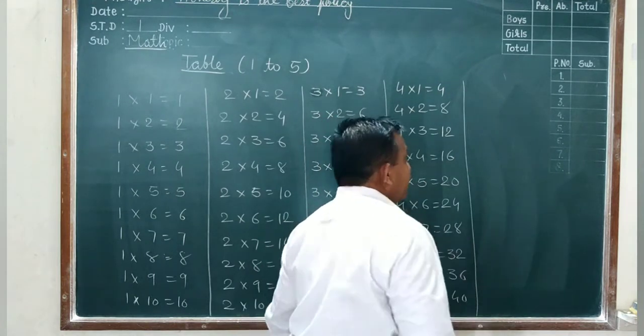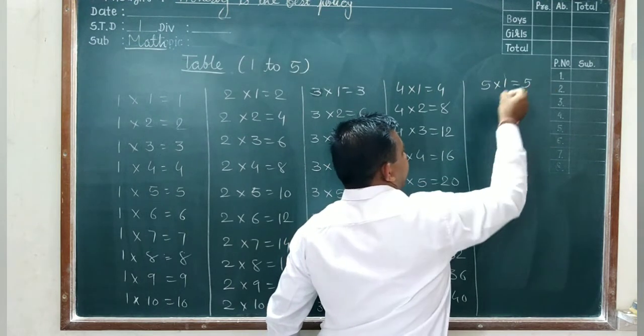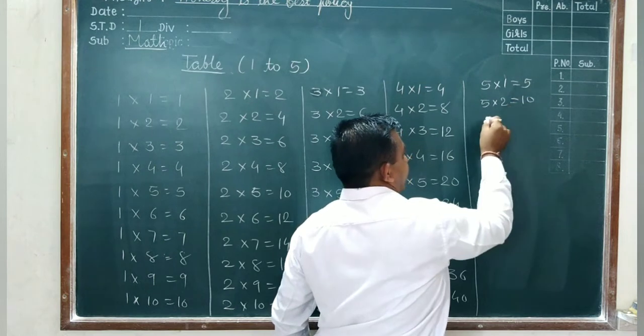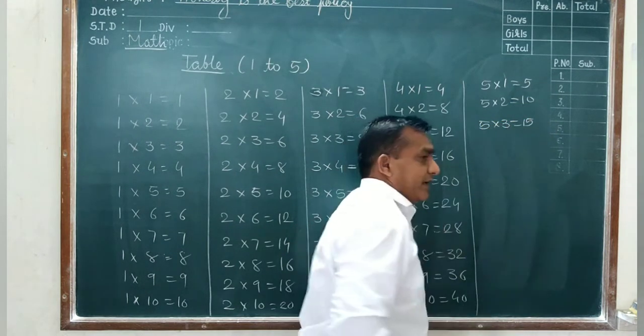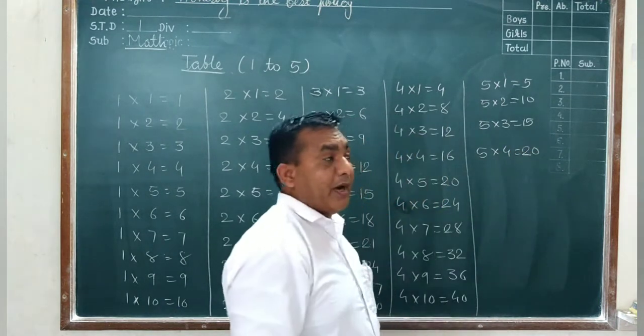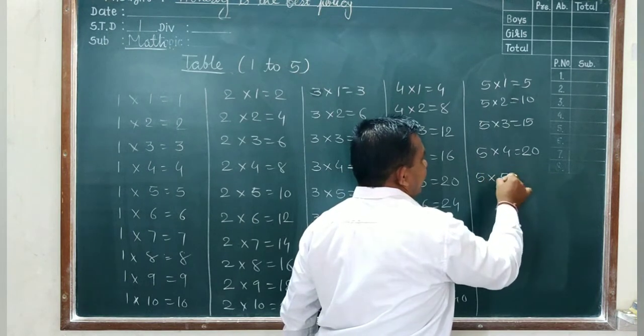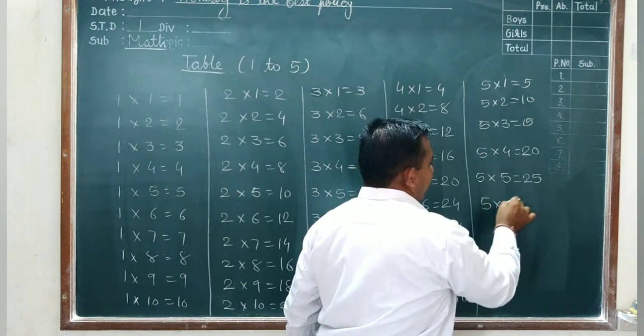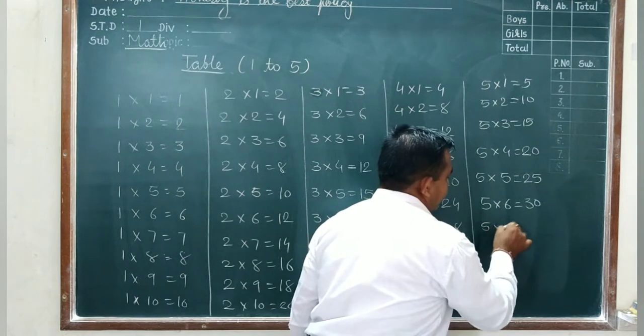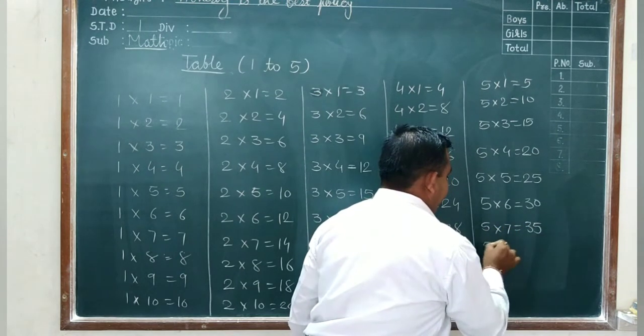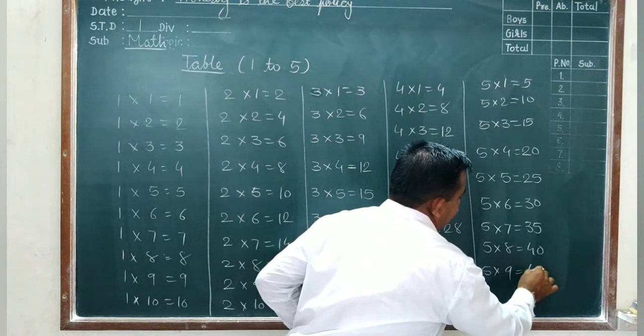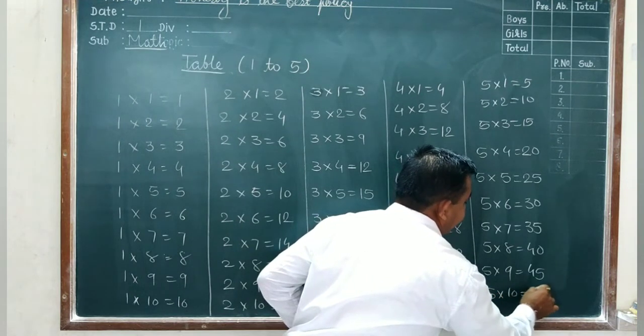Now table 5: 5 ones are 5, 5 twos are 10, 5 threes are 15, 5 fours are 20, 5 fives are 25, 5 sixes are 30, 5 sevens are 35, 5 eights are 40, 5 nines are 45, and 5 tens are 50.